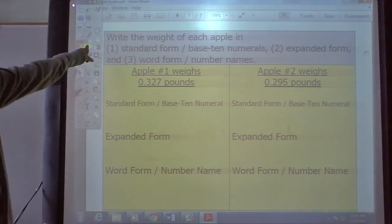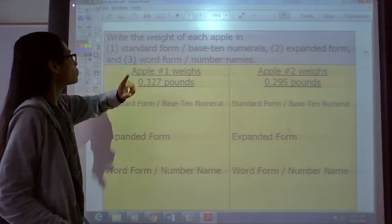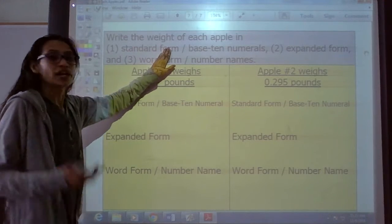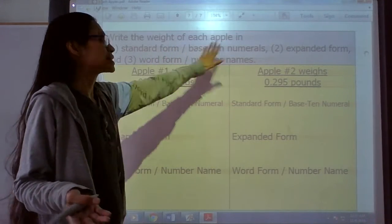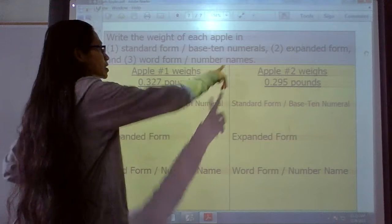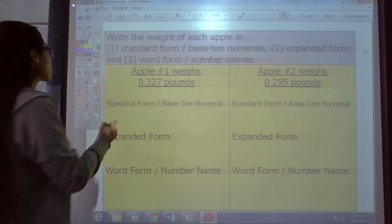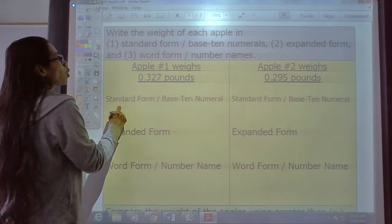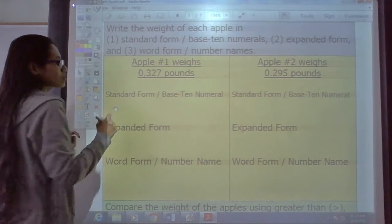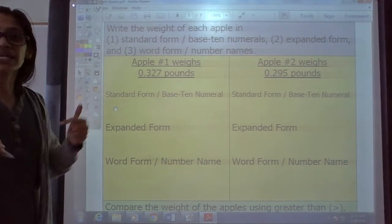It says right here, write the weight of each apple in standard form, and another way to say that is base-ten numerals, and the second way, expanded form, and the next way we need to write is in word form or in number names. Okay? So, let's begin.